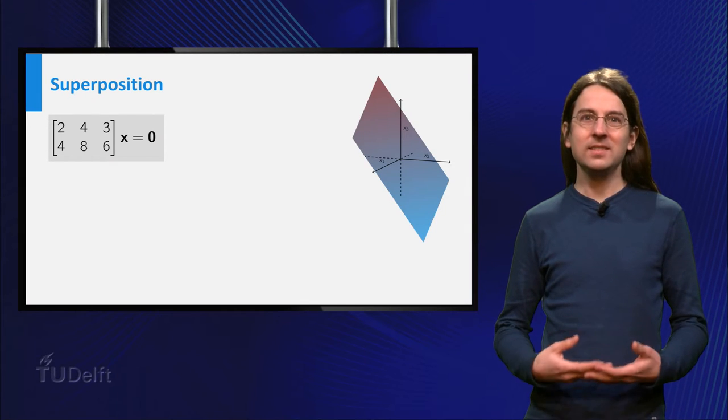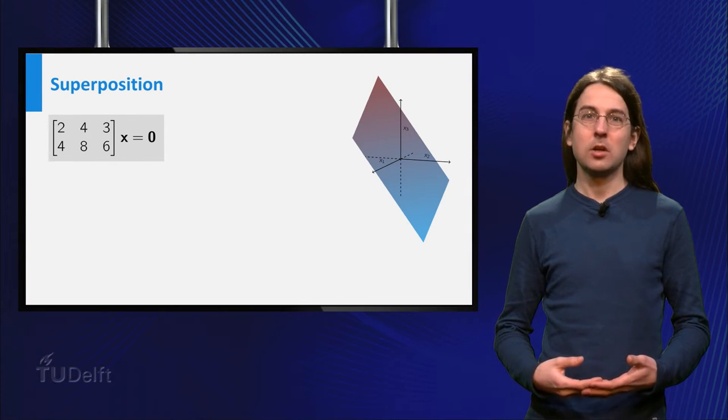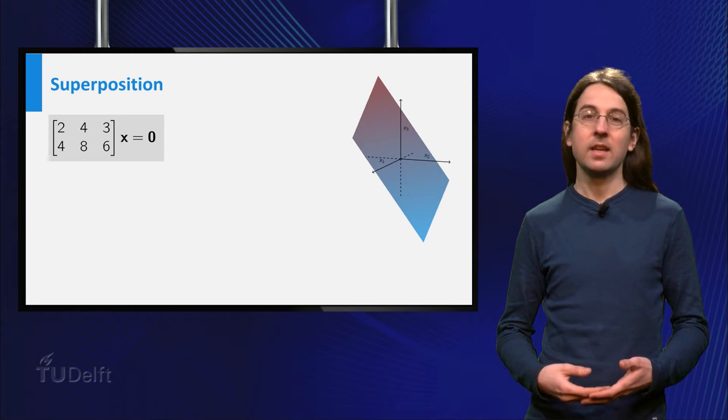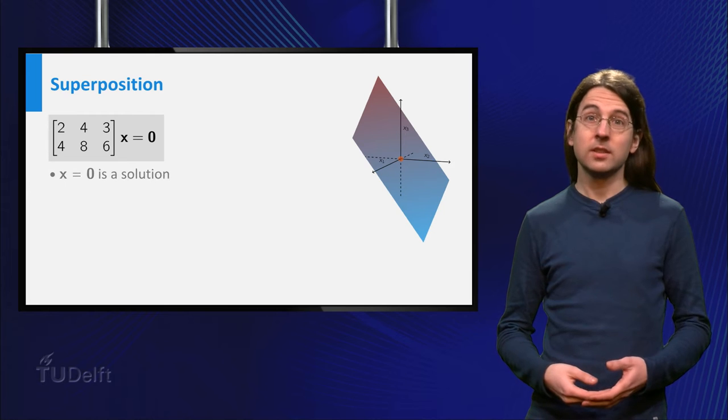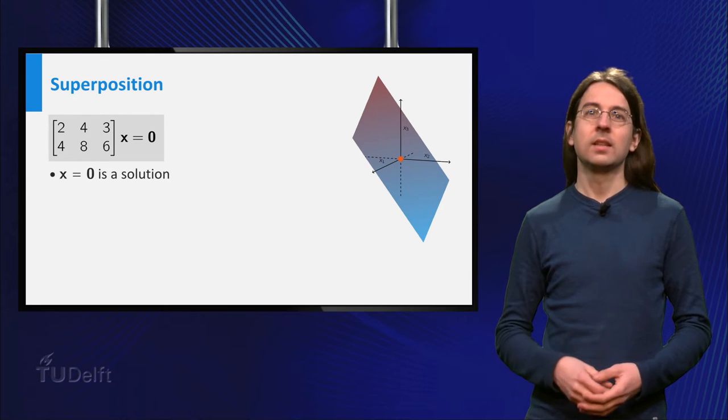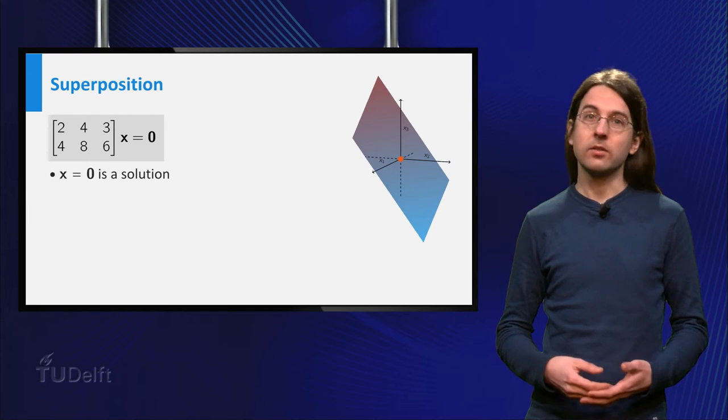Welcome. Let us consider the solutions of a homogeneous matrix equation A times x equals zero. You know that this equation always has a trivial solution x equals zero.